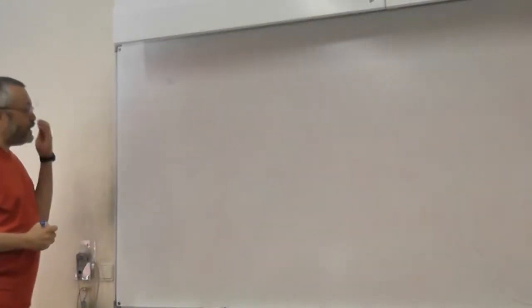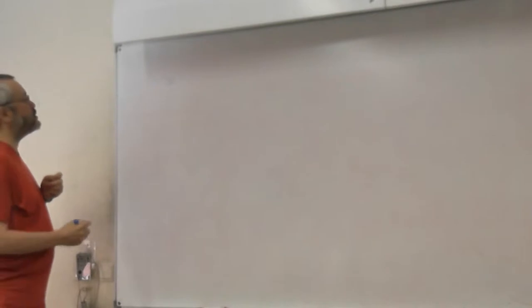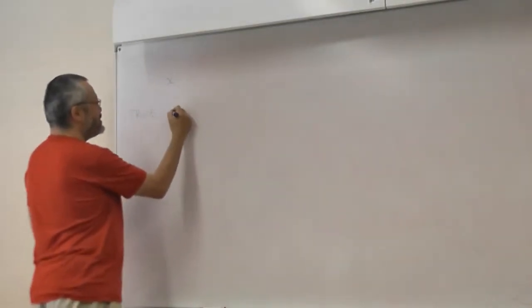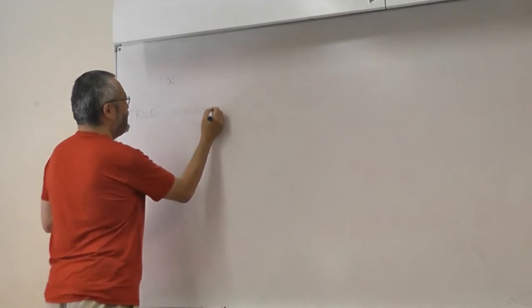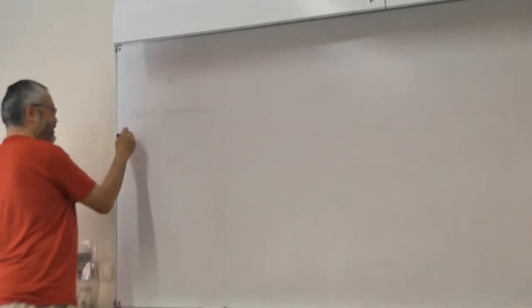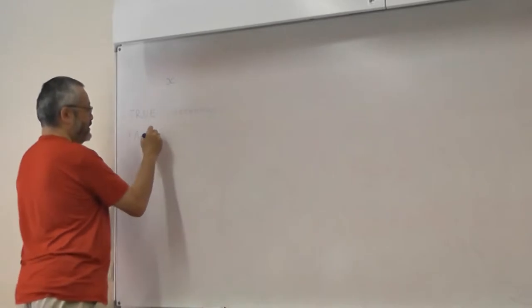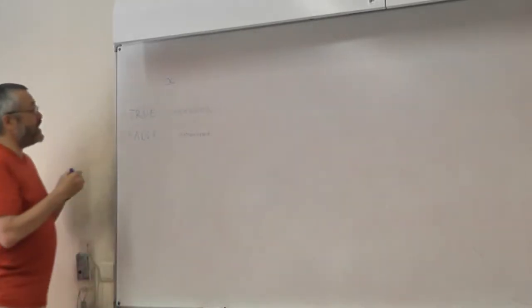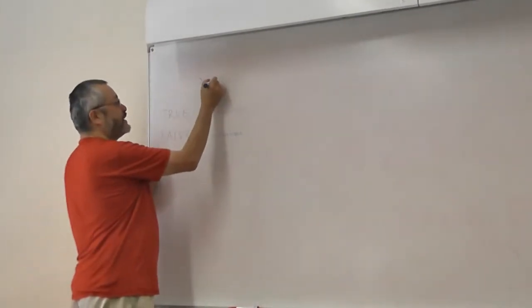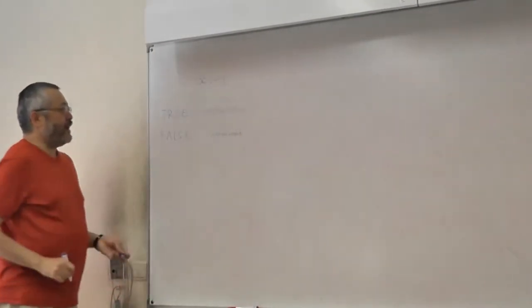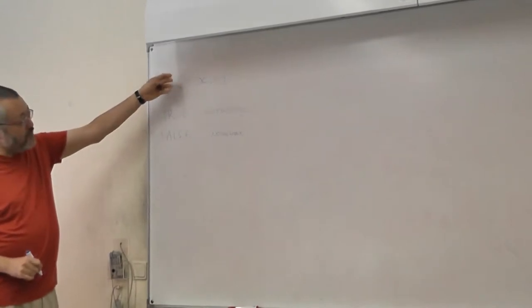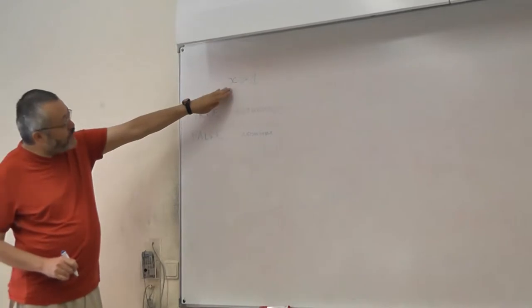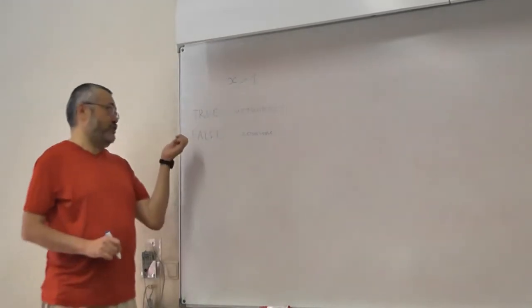So imagine, in logic, all statements are true or false. True is still there, false is also there. So the idea is that, of course, if we write x greater than 1, we don't know whether it's true or false because we don't know what is x.